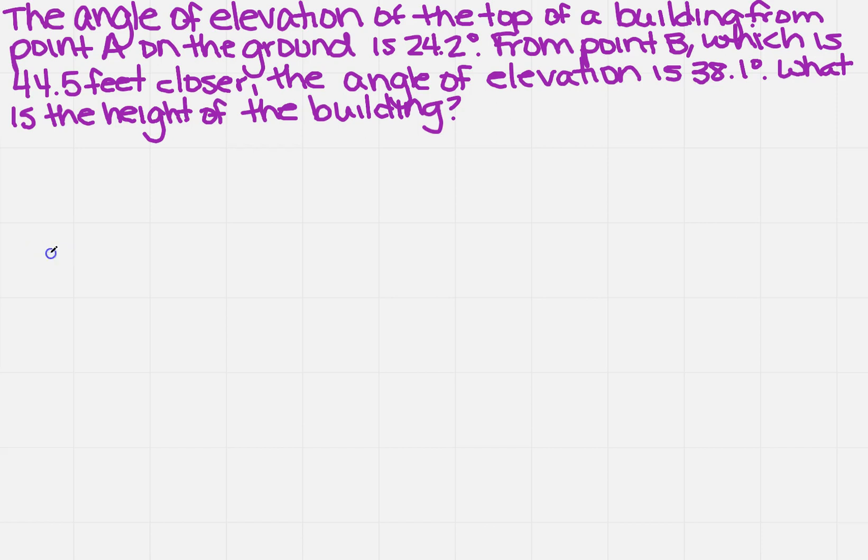So I've got this point A, and there's this building somewhere over here that I'm looking at. I'm going to call that C, because it gave me an A and a B already. I've got the ground happening here, and that angle is 24.2. Then I've got this other point, and it is 44.5 feet closer, so this is 44.5 feet. Now its angle of elevation up to that same point is 38.1. So this angle right here is 38.1.